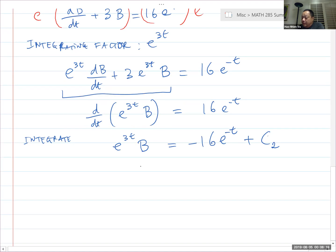Divide both sides by e^(3t). End up with B is equal to negative 16e^(-4t). I like to think of it as multiplying both sides by e^(-3t). So I have negative 16e^(-4t) plus C_2 e^(-3t). All right. So this is the function of B as a function of t. Sorry about that.